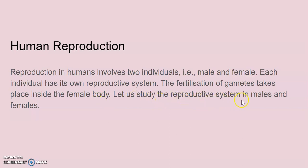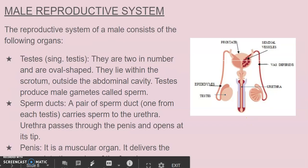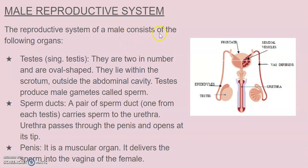First, let's study about the male reproductive system. The male reproductive system consists of the following organs. First is testes. They are two in number and are oval in shape. They lie within the scrotum, which is a bag-like structure in which the testes are situated outside the abdominal cavity. The main function of testes is to produce male gametes called sperm.